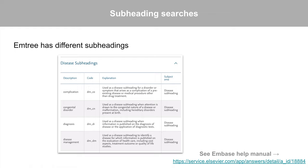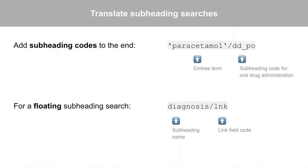Does your PubMed strategy use subheading searches? mTree has different subheadings from the MeSH system. To see the available subheadings and their codes, refer to the Embase help manual. Here's a quick overview on translating Embase subheading searches. Add subheading codes to the end of an mTree term. For a floating subheading search, which seeks a subheading attached to any mTree term, enter the full subheading name followed by the link field code forward slash LNK. Refer to the Embase help manual for details.